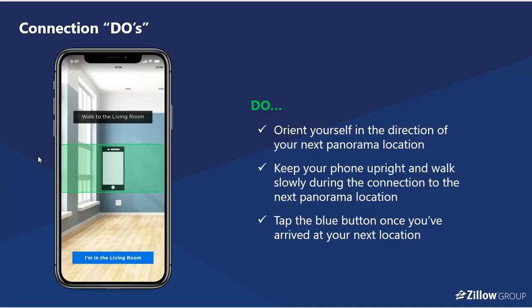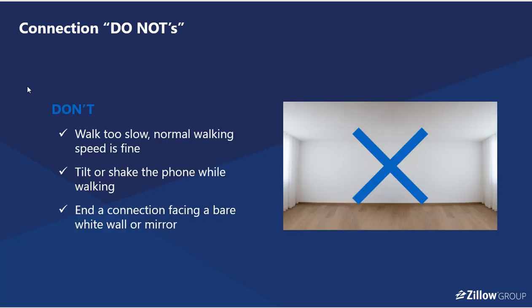Things to do: orient yourself in the direction of your next panorama location once you've completed your existing panorama. Hold your phone upright and slowly walk during the connection to your next panorama location. Tap the blue button once you've arrived at your next location and it will prompt you to create the panorama there. Things not to do: don't walk too slowly — normal walking speed is fine. Don't tilt or shake the phone while walking, and don't end the connection facing a bare wall, white wall, or mirror, as you'll be caught in it.